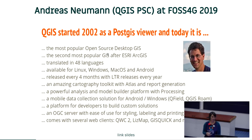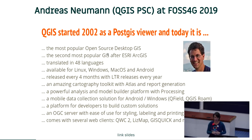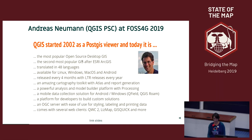Three weeks ago at PostGIS there was Andreas Neumann, who is in the PSC of QGIS, from Switzerland. He talked about the state of QGIS. It's the second most popular GIS after Esri ArcGIS, translated into 48 languages, and platform independent — you can use it on Linux, Windows, Mac OS, and Android. There are four releases every four months with a long-term release every year.